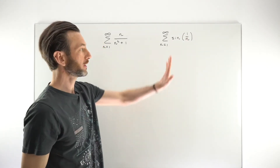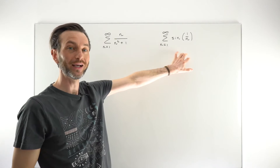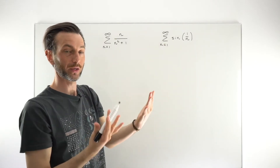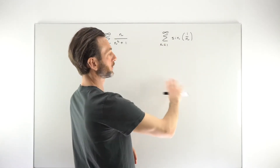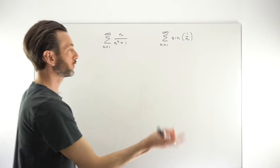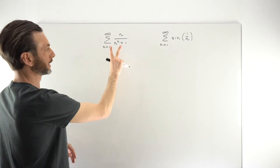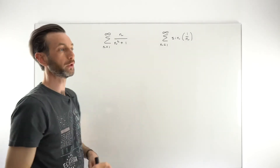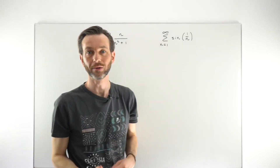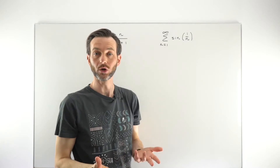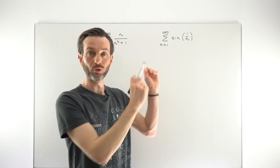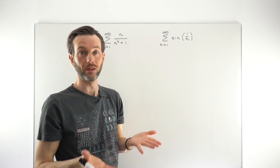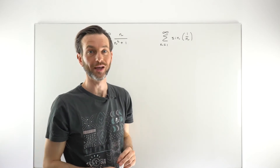We're going to explore this example - it turns out it's quite a difficult example and brings in some other things we need to consider. Before we get to that, we're going to consider a slightly easier example just to get a feel for how the limit comparison test works. But first, let's think about what the limit comparison test actually is.